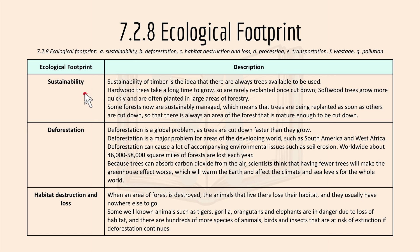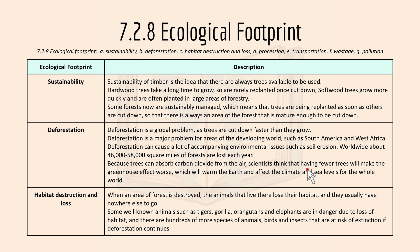7.2.8 covers ecological footprint, including sustainability, deforestation, and habitat destruction. Sustainability of timber is the idea that there are always trees available to use. Hardwood trees take a long time to grow and are rarely replanted, while softwood trees grow more quickly. Some forests are now sustainably managed, meaning trees are replanted as soon as others are cut down, so there is always a mature area of forest available. Deforestation is a global problem as trees are cut down faster than they grow, particularly in developing regions like South America and West Africa. It causes environmental issues such as soil erosion, and because trees absorb carbon dioxide, fewer trees worsen the greenhouse effect, warming the earth and affecting climate and sea levels.